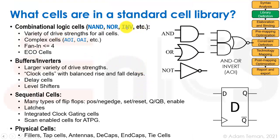So what cells are in a standard cell library? Combinational logic cells: NAND, NOR, inverters and so forth. ECO cells, those are cells for fixing things using metal fill or something like that. Buffers and inverters, we have a lot of buffers and inverters including clock cells, delay cells, and level shifters. And sequential cells, many different types of flip-flops, latches, integrated clock-gating cells, scan enabled cells and so forth. And physical cells: fillers, tap cells, antennas, decaps, end caps, tie cells, and so forth.